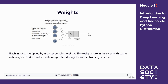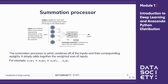Each input is multiplied by a corresponding weight. The weights are initially set with some arbitrary or random value and are updated during the model training process. The summation processor combines all of the inputs with their corresponding weights — it simply adds together the weighted sum of inputs: X1W1 plus X2W2 plus X3W3, for all inputs and their corresponding weights.